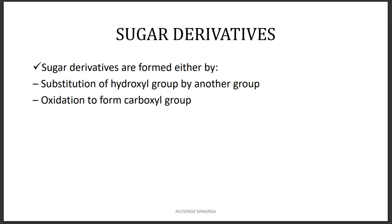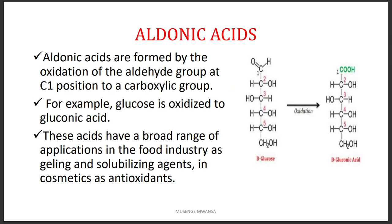When talking about sugar derivatives, these are compounds formed when the hydroxyl group of a sugar molecule is replaced by another group, or when oxidation of the carbonyl functional group occurs. Aldonic acid is formed by the oxidation of carbon number one of aldehydes. In the case of D-glucose, when you oxidize carbon number one, you form gluconic acid. Gluconic acids are important as gelling and solubilizing agents, and also in cosmetics as antioxidants.